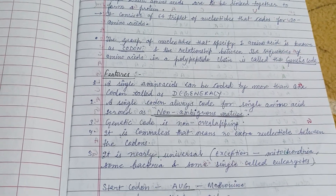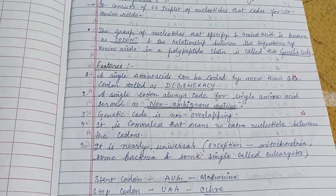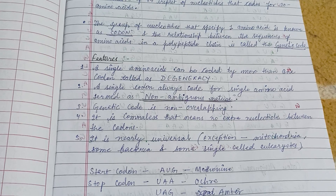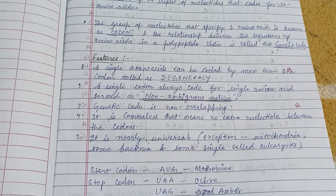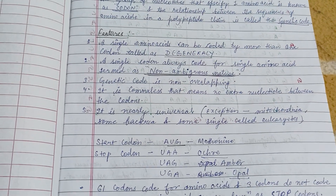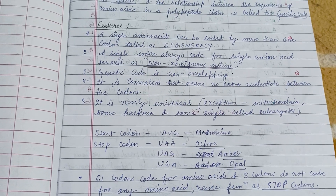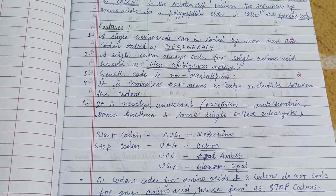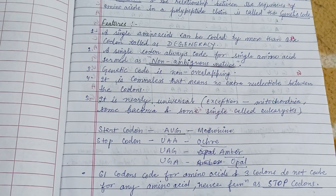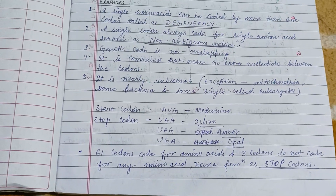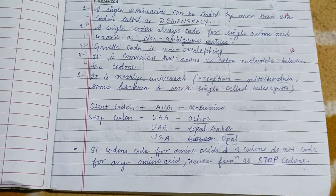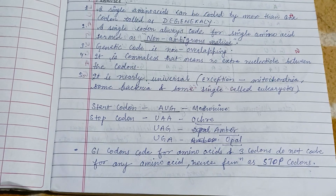The group of nucleotides that specify one amino acid is known as the codon, and the relationship between the sequences of amino acids in a polypeptide chain is called the genetic code. Features include: it shows degeneracy, non-ambiguous nature, it is comma-less, and the start codon is AUG, which also codes for the methionine amino acid.